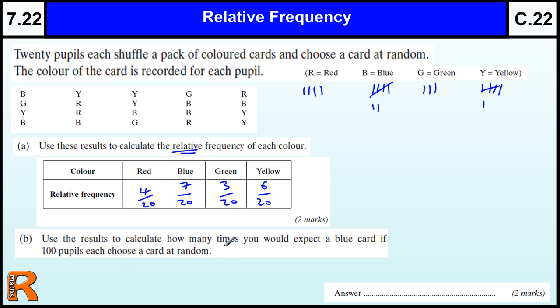Use the results to calculate how many times you would expect a blue card if 100 pupils chose a card at random. So, the blue card, currently our best guess of the probability is 7 out of 20. So, if 7 out of 20 choose a blue card, then it will be 14 out of 40, 21 out of 60, 28 out of 80, 35 out of 100, or we can just times by 100 and that would give us 700 over 20, which would be 35.